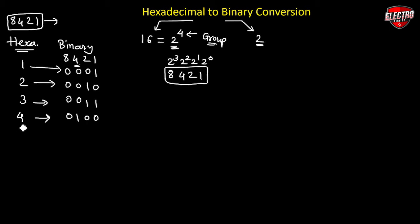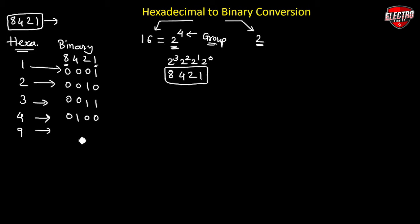For hexadecimal 9, we use 8 plus 1, which gives the equivalent binary number 1001.